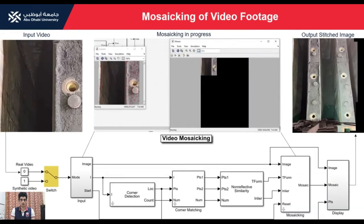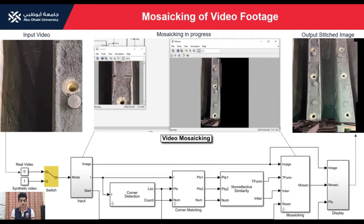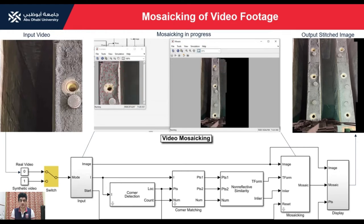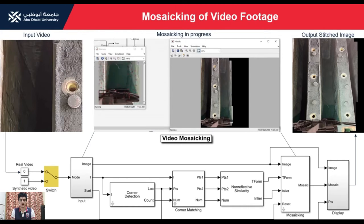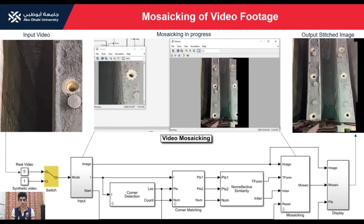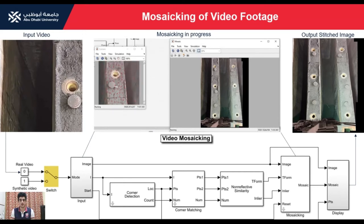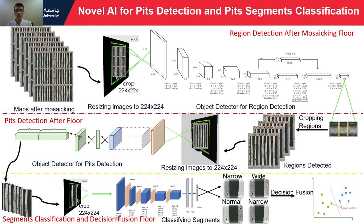Our mosaicing software is used mainly to transform a group of frames taken by the drone into one larger frame, to help us detect the pits and classify them accordingly — since the camera cannot capture all the pits in a single frame.